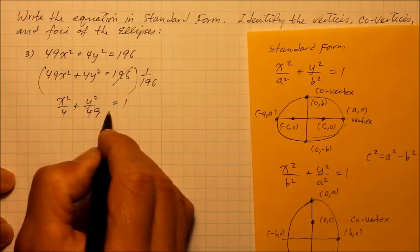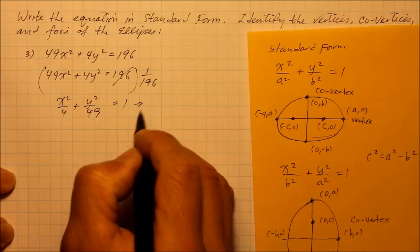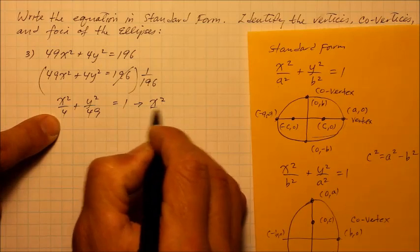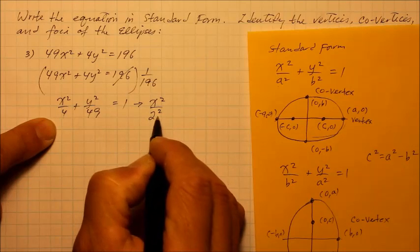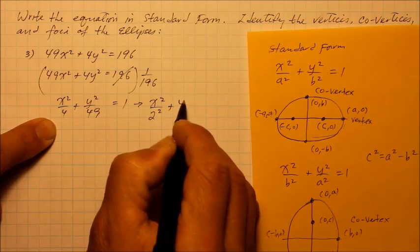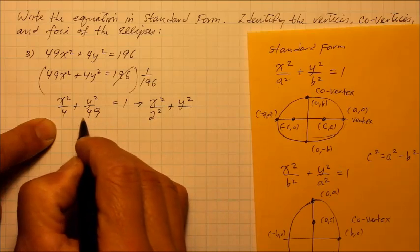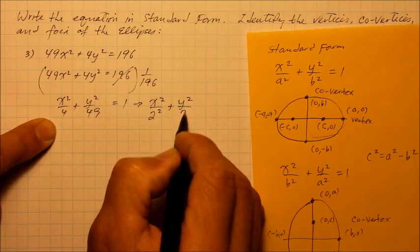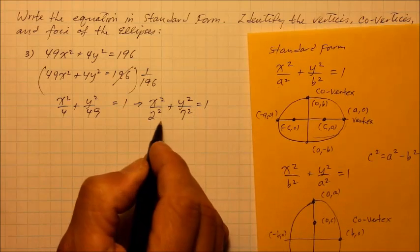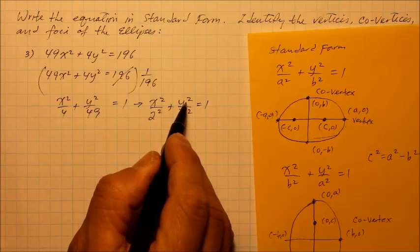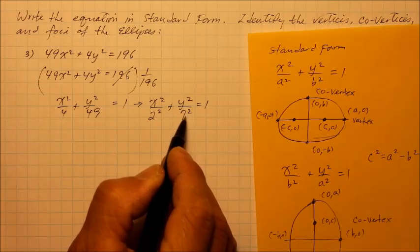Now that is in standard form, and I personally prefer to write that in an exponential form. So we got x squared over square root of 4 is 2, so base 2 raised to 2, plus y squared over square root of 49 is 7. So 7 squared becomes 49, and I could see right away that the y squared has the bigger number, so that's going to be the a.